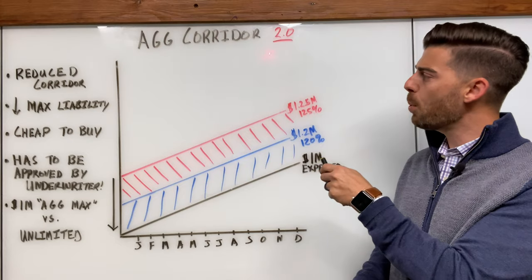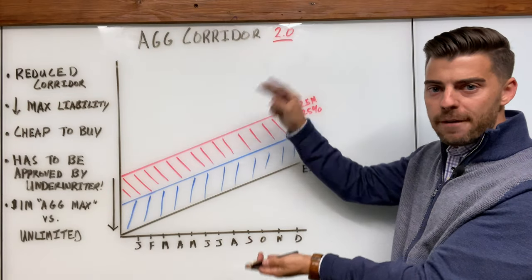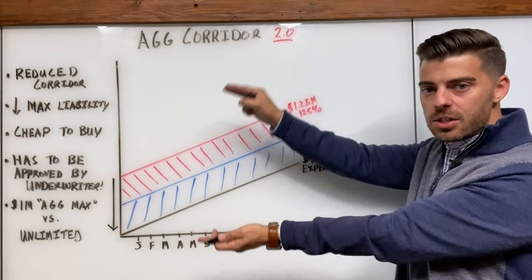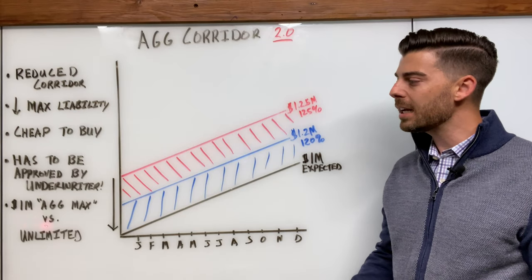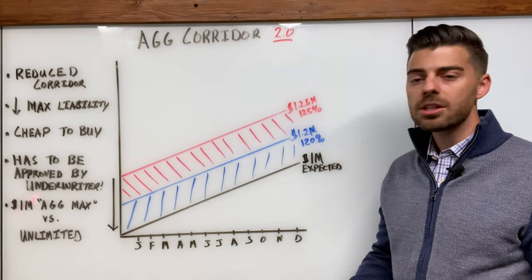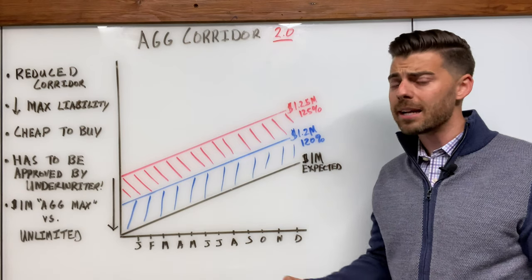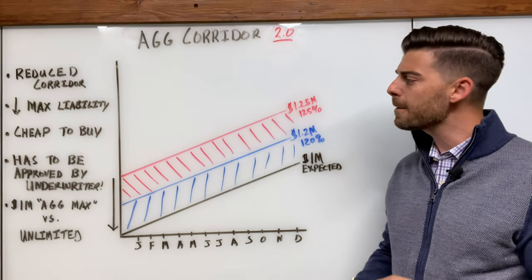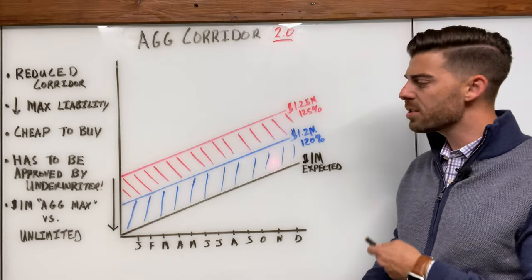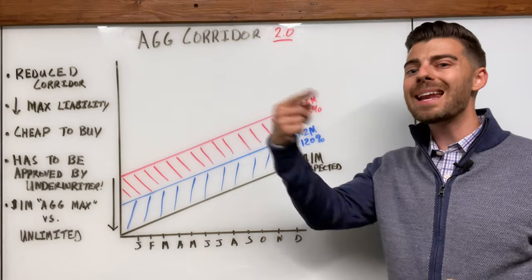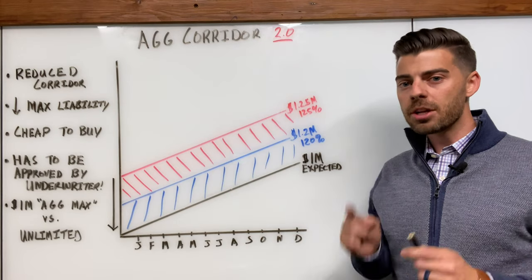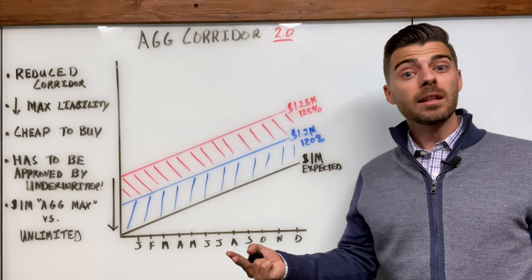So, aggregate corridor 2.0, squash that buffer, feel like an alligator, squash it a little bit if you want to reduce that maximum liability. And again, consider the strategy to potentially increase that ag max to two million if it helps you sleep at night. But really, this is just one of those things, as you start pulling different levers and get more comfortable with stop loss, that might be that next generation of negotiation strategies for you. So, let me know.